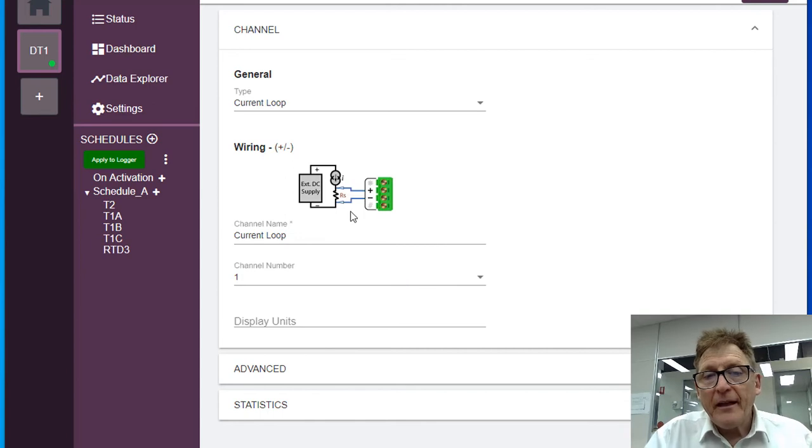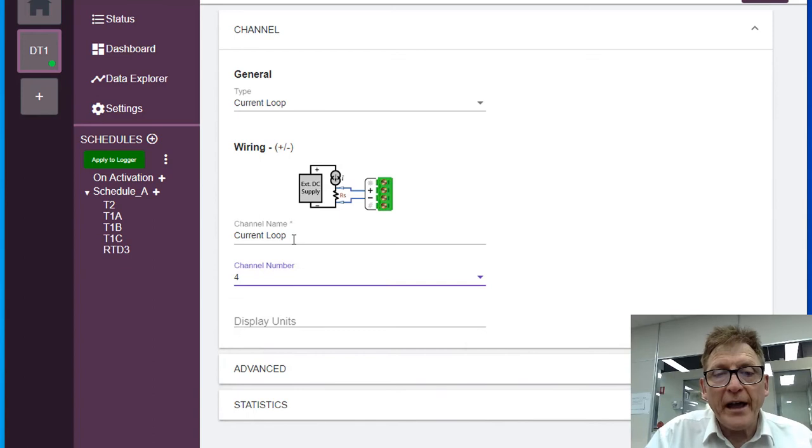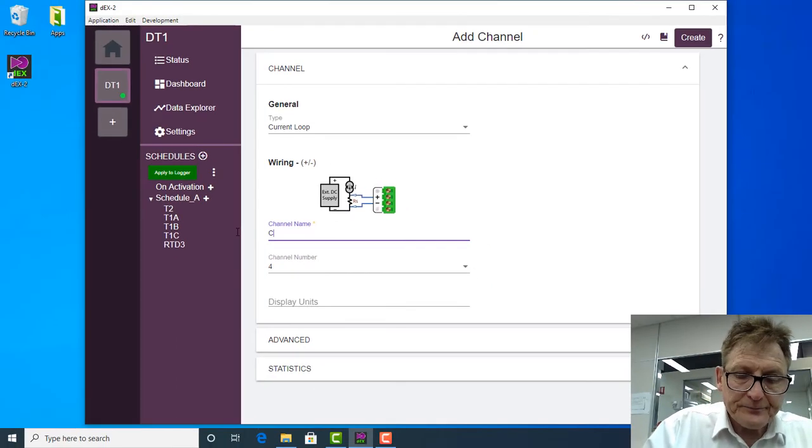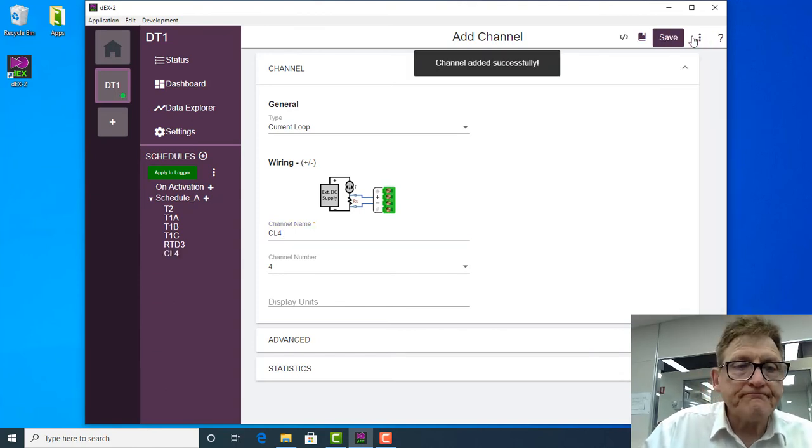So that's the wiring and we're going to call it up. We've wired it up to channel four and I'm going to call it current loop, CL4, and we create that. And again, we apply it to the logger.